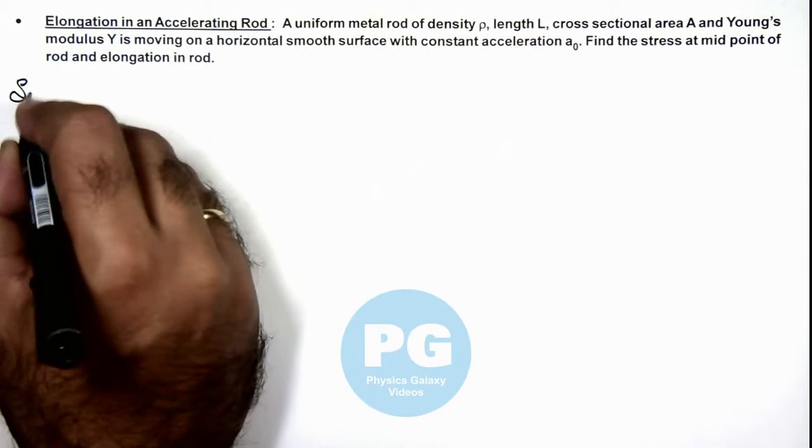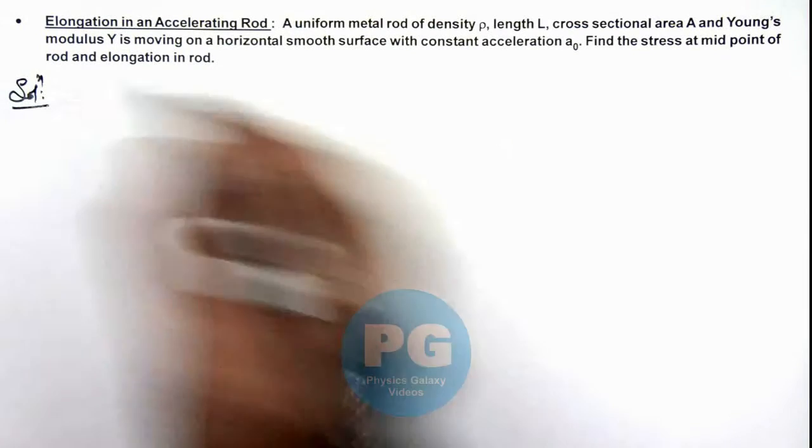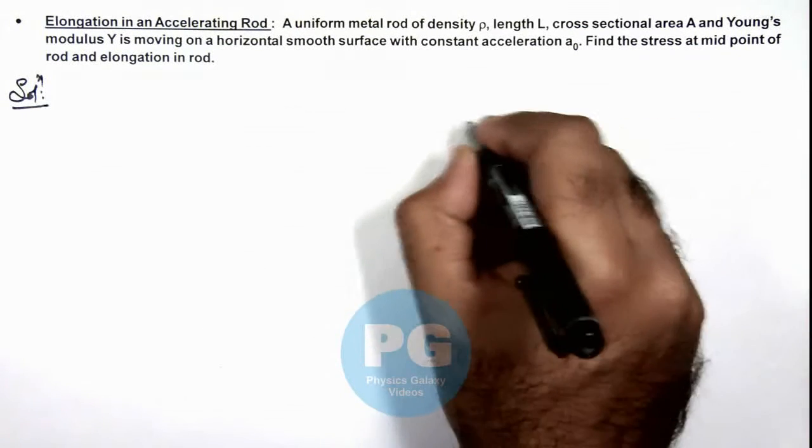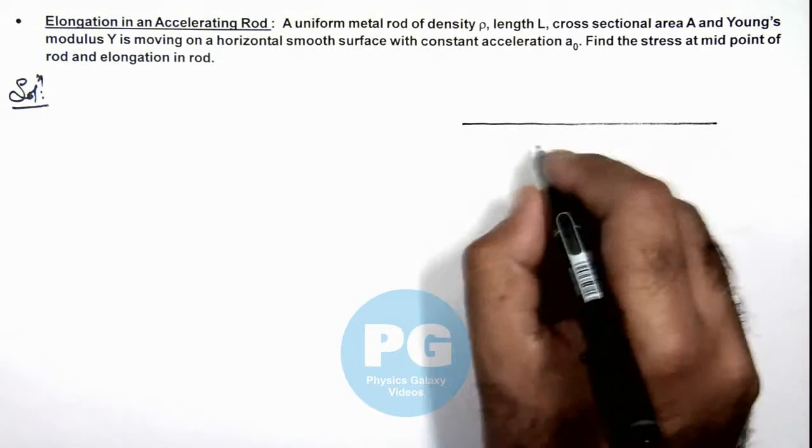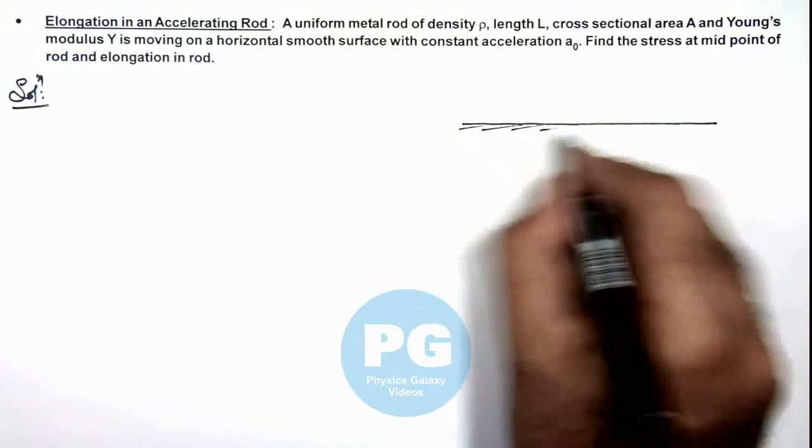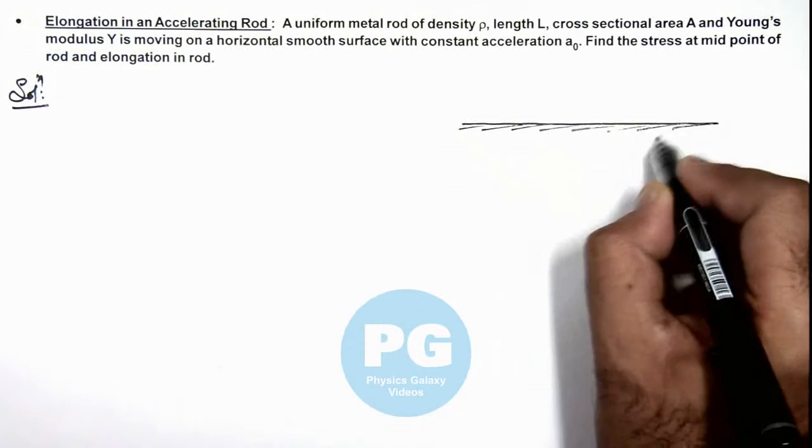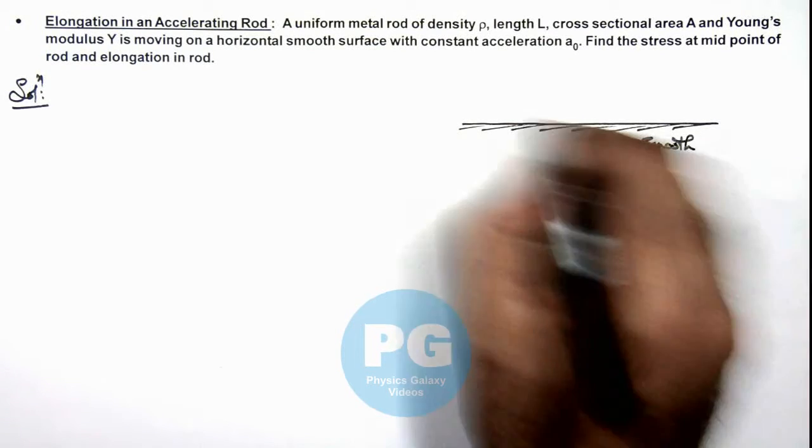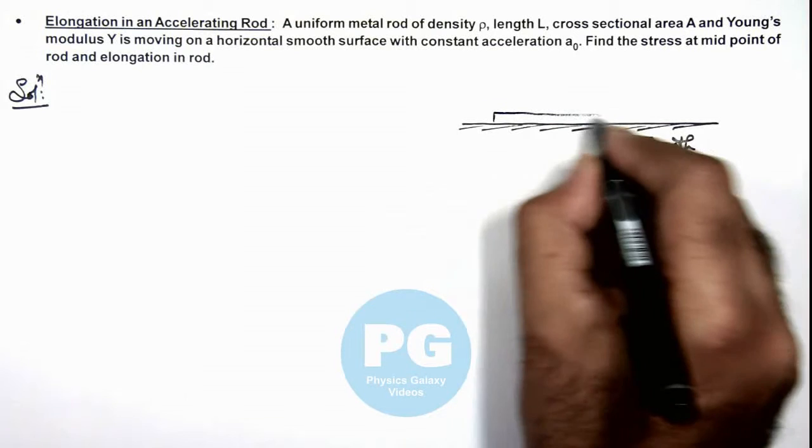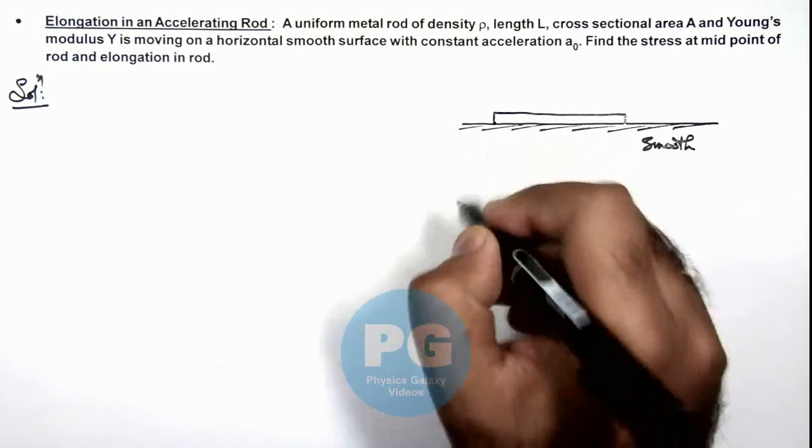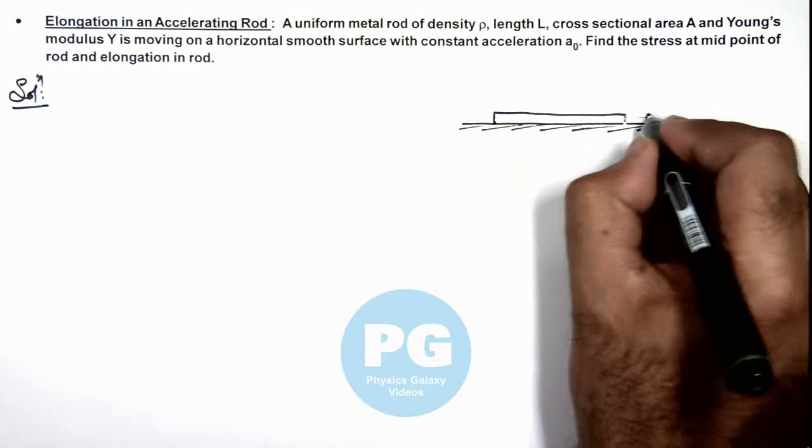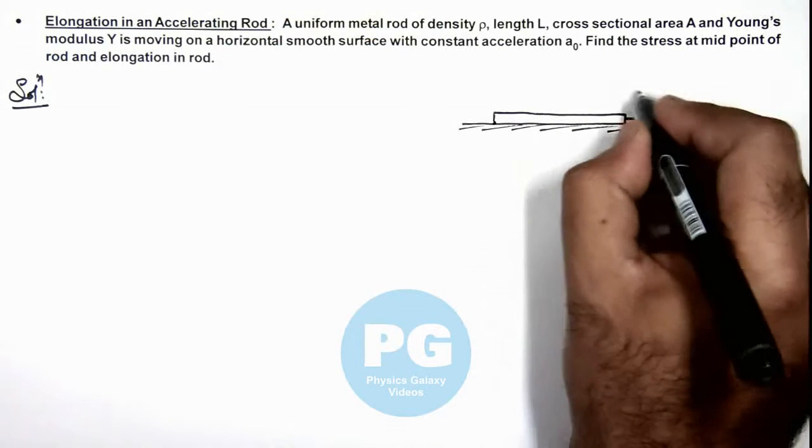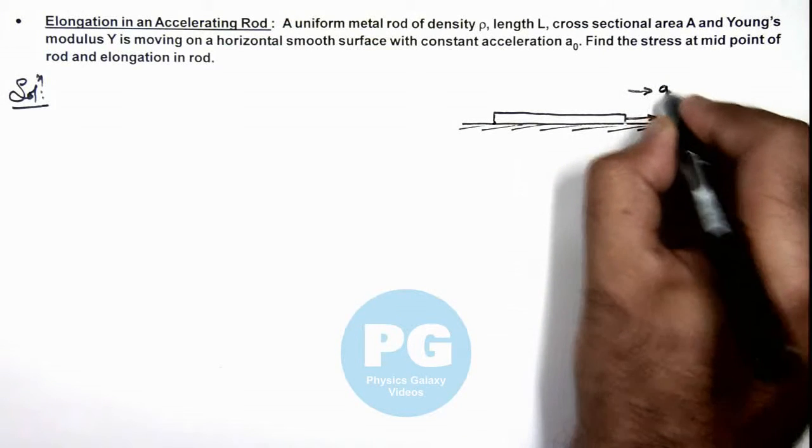Now in this situation, we can analyze it by considering a rod placed on a smooth horizontal surface. If I draw the picture, this is considered to be a smooth surface on which a rod is considered. An external force F is acting on it due to which it is accelerating with acceleration a₀.